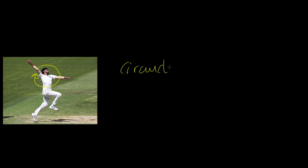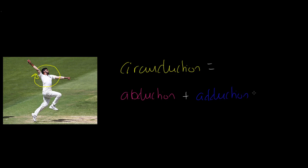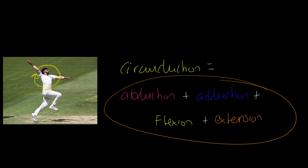Finally, the bowling action. The bowling arm circles all the way around — we call this circumduction. Circumduction equals abduction plus adduction plus flexion plus extension. It's a combination of all those movement patterns creating the circular motion, which in this case is the bowling action.